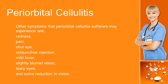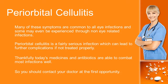Other symptoms that periorbital cellulitis sufferers may experience are redness, pain, shut eye, conjunctival injection, mild fever, slightly blurred vision, teary eyes, and some reduction in vision. Many of these symptoms are common to all eye infections and some may even be experienced through non-eye-related infections.